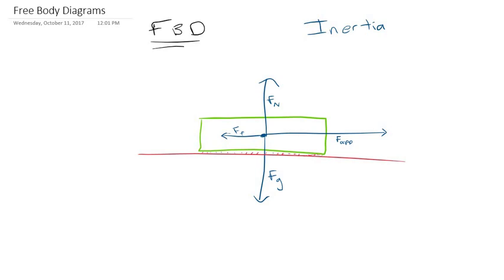To give this a little more concrete sense, I'm going to give these numbers. Let's just say the applied force here is 15 newtons, and the force of friction is 5 newtons. Then you can say that the net force is 10 newtons in the direction of the applied force, so it will begin to accelerate.